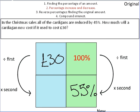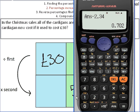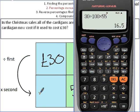Again, we've filled it out now, so all we need to do is get our calculator up. Plug in our original amount. Divide by 100 times by 55. It's the new price. £16.50.